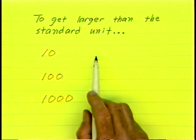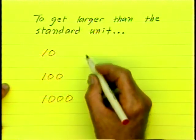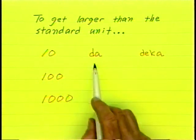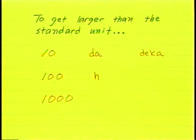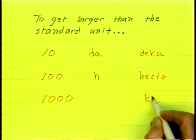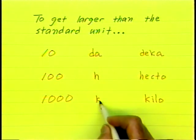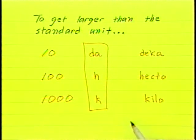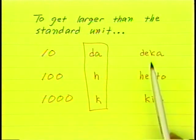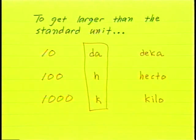The prefix for 10 is DA, and the word for that is deca. If you have 100 of something, the prefix is H, and the word name is hecto. And if you have 1,000 of something, you have a kilo, and the prefix is K. If you remember these 3 units of powers of 10 in metric words and metric prefixes, working with metrics is quite simple.